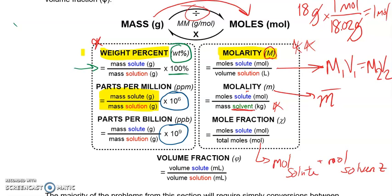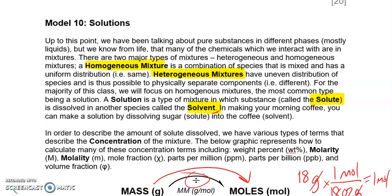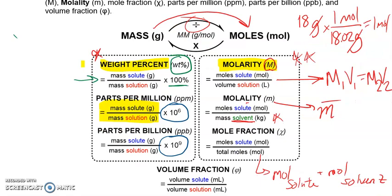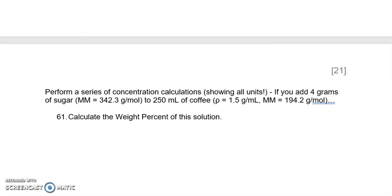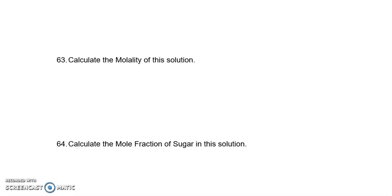That walks through all the concentration types, and I have this table for you to reference. You're expected to know each of these, but notice there are a lot of similarities. Don't worry as much about parts per million, parts per billion, and volume fraction. Molarity and molality are probably the two most common. We'll walk through a lot of practice problems in the next video, but this gives you an introduction to what a solution is and what the units of concentration are — just describing how much of our solute exists in that mixture.